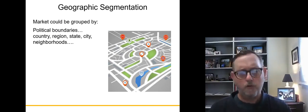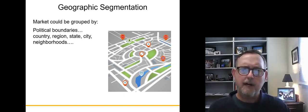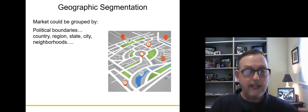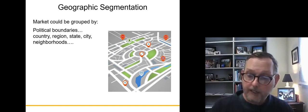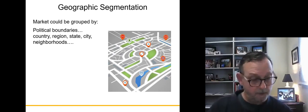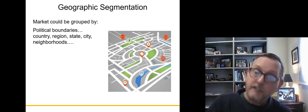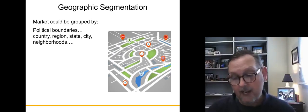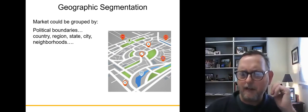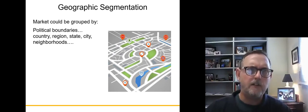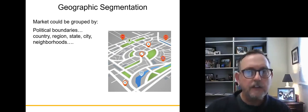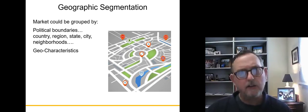When we do geographic segmentation, we can identify our consumers by political boundaries — meaning states, counties, cities, countries. People who live and work in a specific county can be distinguished from people in a different county. Zip codes are used a lot, and place of residence or where people work is used frequently because it's easy to capture.